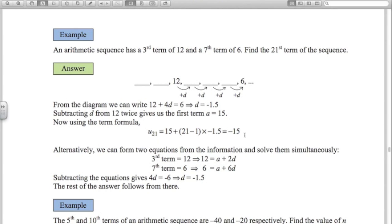Another way of doing this is to form two simultaneous equations and solve them. The third term, 12, is A plus N minus 1 times D. Seventh term, 6, is A plus N minus 1 times D. You subtract these two equations, you get 4D equals negative 6, and from there you can go exactly the same as we did above.